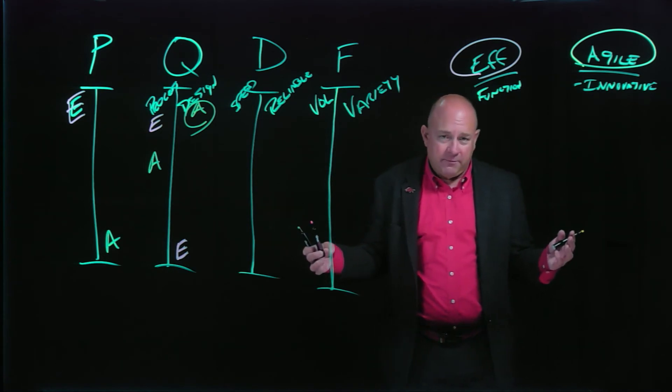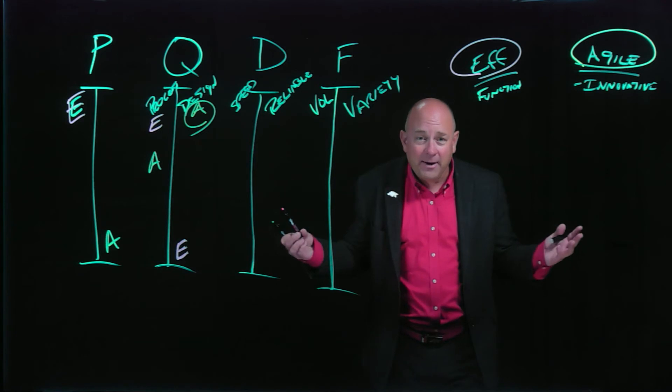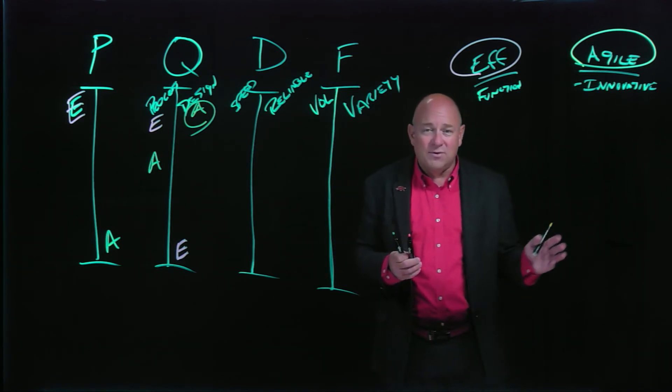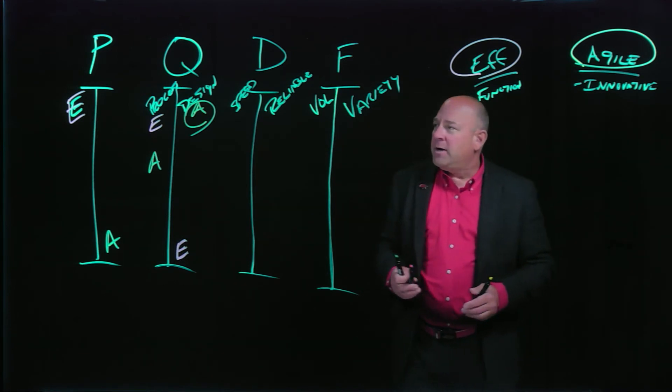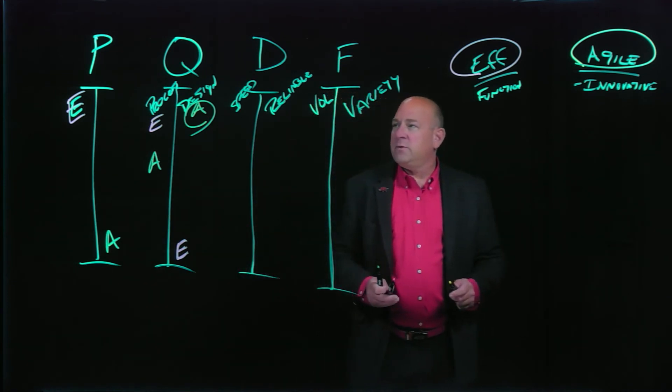I mean, heck, think about Apple for a moment. What does Apple manufacture? Nothing, nothing at all. They are a design and an innovation company and they actually outsource manufacturing of their iPhones to Foxconn. So design, very important to agile, less important to efficient.